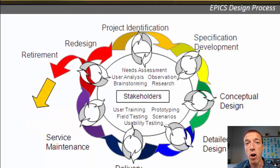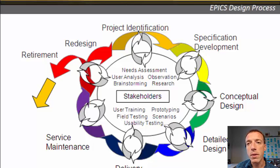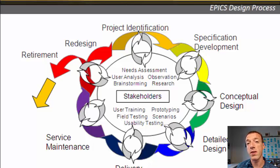Jumping right into the overview for the EPICS design process, you can see it's a process that goes in a circle — it does complete back around through redesign. We start with project identification at the top, where you figure out exactly what your project is. Then you move into specification development, where you're putting quantitative metrics to those user needs so that you can evaluate your designs as you go forward.